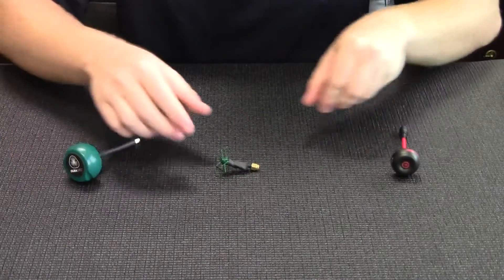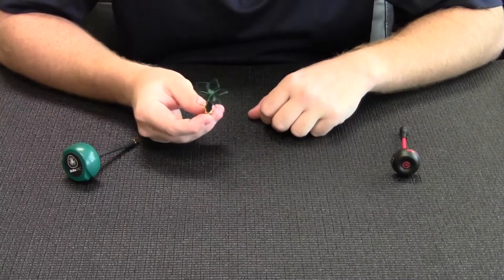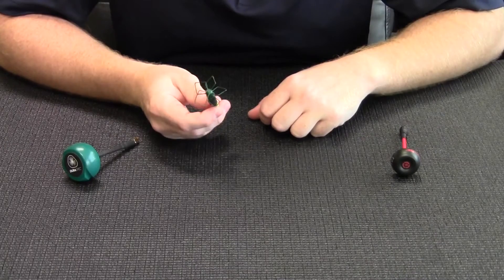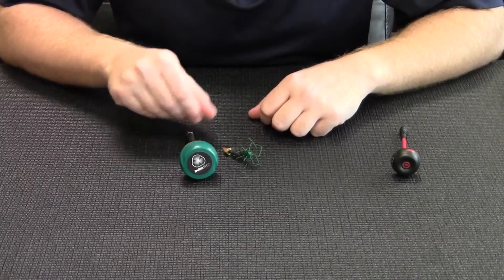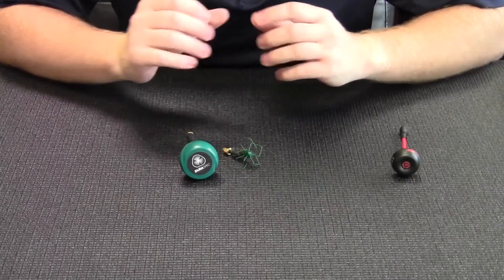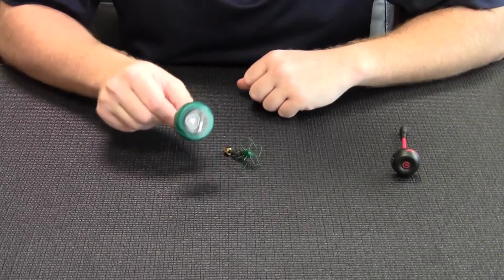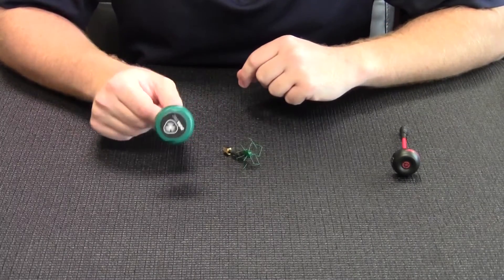In addition to that, this antenna weighs in at a mere 6 grams which is considerably lighter than what you're going to find in the DuraSpec line of Video Aerial Systems antennas with this one weighing in at a little over 22 grams.